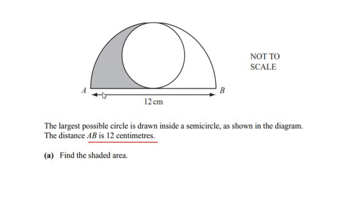The distance AB is nothing but the diameter of the given circle. So if we consider a point O, that is the center of the semicircle, it divides the entire length into two equal halves. So we have OA as 6 centimeters and we have OB as 6 centimeters, and OA and OB act as the radius of the given semicircle.